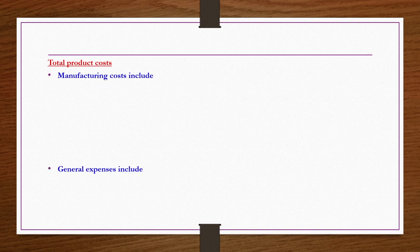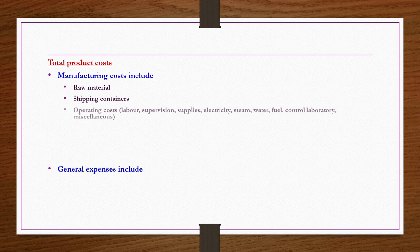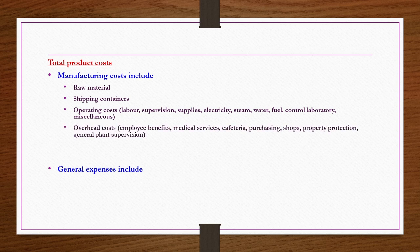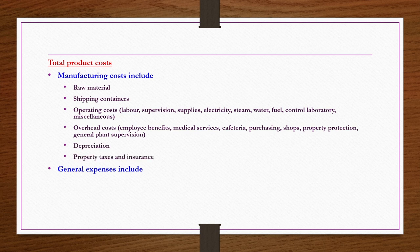Under total product cost, you have manufacturing cost and general expenses. Manufacturing cost covers cost of raw materials, shipping containers, operating cost for labor, supervision, supplies, electricity, steam, water, fuel, control laboratory, and miscellaneous items. Overhead cost includes employee benefits, medical services, cafeteria, purchasing, property protection, and general plant supervision. Depreciation, property taxes, and insurance also come under manufacturing cost. Under general expenses, you have freight and delivery expenses, administrative expenses, and sales and research expenses.